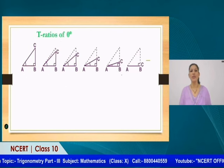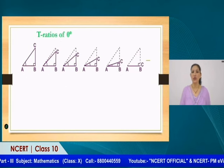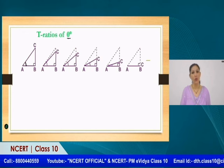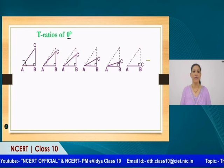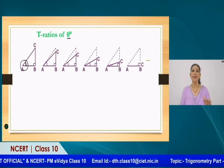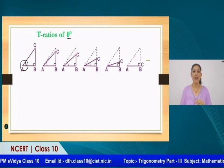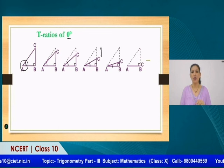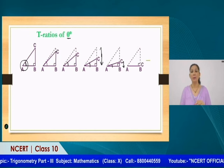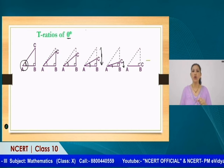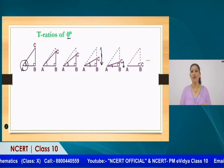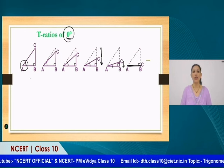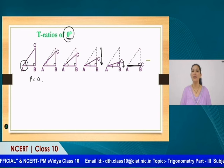Let us discuss 0°. To find the values of various T-ratios for 0°, we are making the base angle equal to 0. If you take the angle at point A and keep decreasing it, the height (perpendicular) also decreases. When you decrease enough, there is a point where the height will vanish — and that point is when the base angle becomes 0°. So if the base angle is 0°, the perpendicular becomes 0 units.